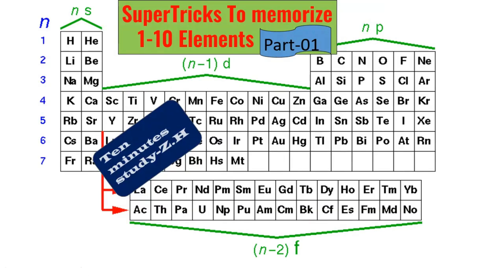I believe you will apply the tricks and techniques. To make you conscious and clear about the coronavirus, today I would like to mention elements one to ten — their atomic number, their serial number, their symbol, and the long form of the symbol. You can see the periodic table here. The number one is hydrogen and the last one is oganesson, having atomic number 118.